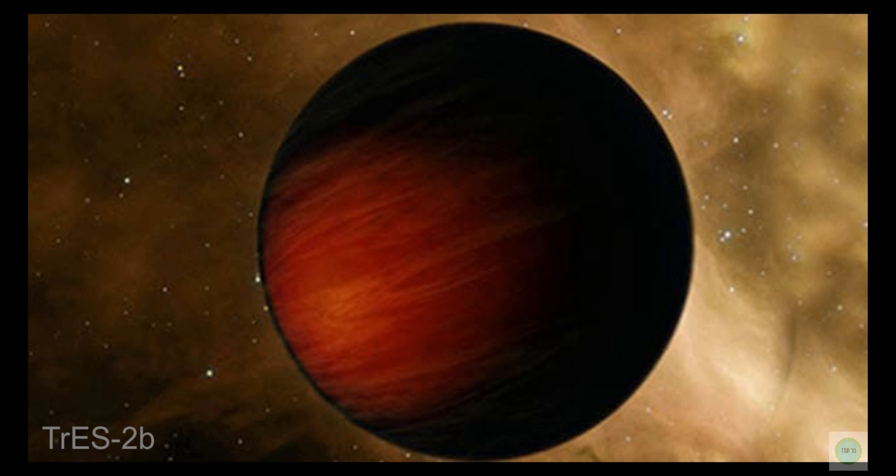Cosmologists believe that the exoplanet reflects so little light since its atmosphere is filled with vaporized sodium and potassium or gaseous titanium oxide. Nevertheless, being dark doesn't mean that the exoplanet is cool. Indeed, its temperatures reach more than 980 degrees Celsius (1,800 degrees Fahrenheit). This extremely high temperature causes some pieces of the exoplanet to emit a red glow, much the same as burning coal or electric stove coils. Astronomers also suspect that the exoplanet is so close to its star that both are tidally locked.